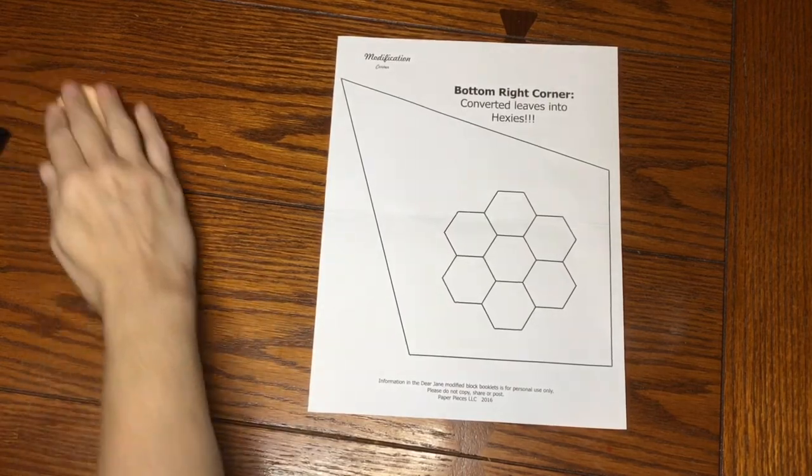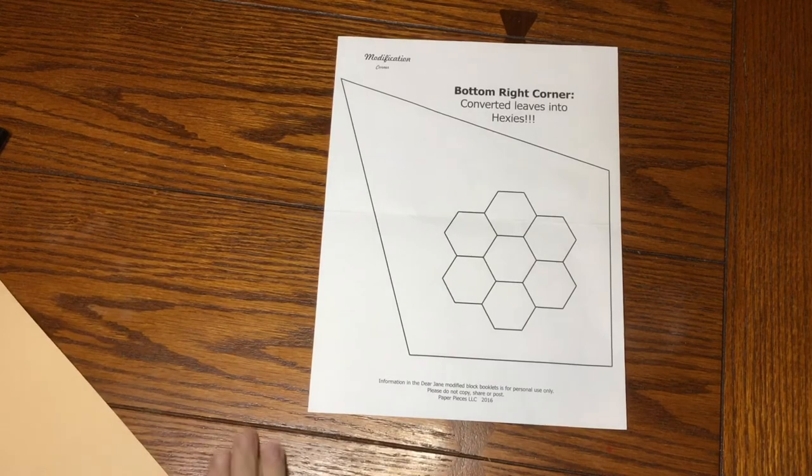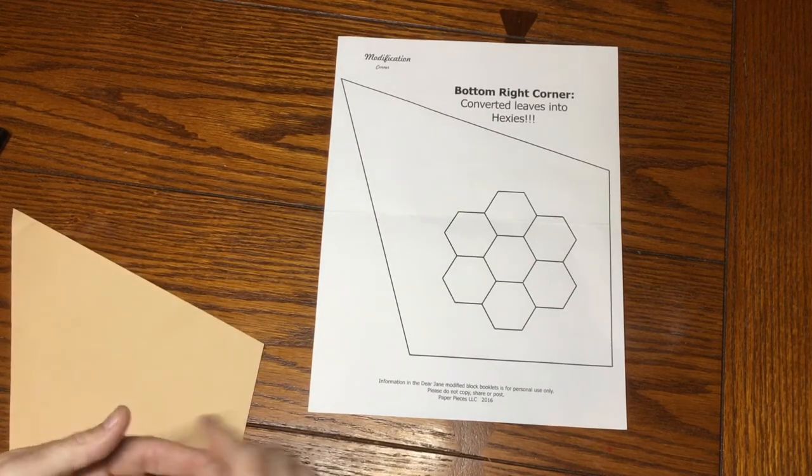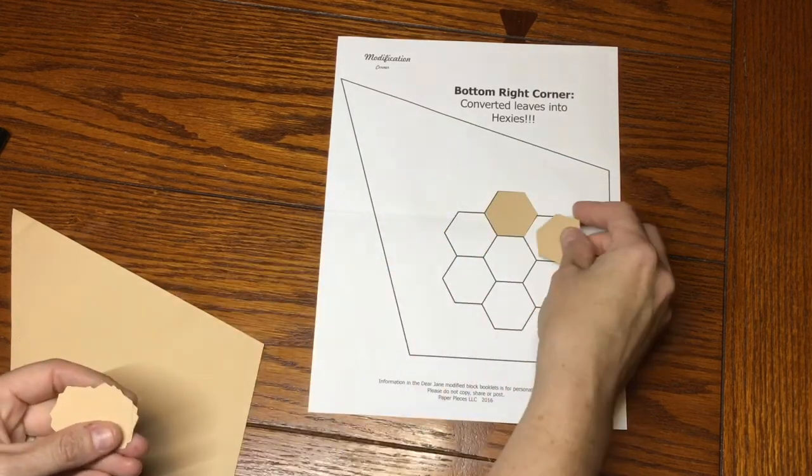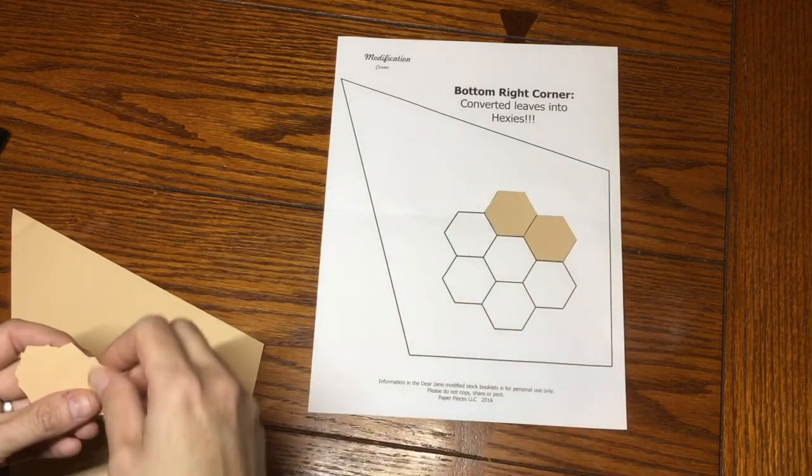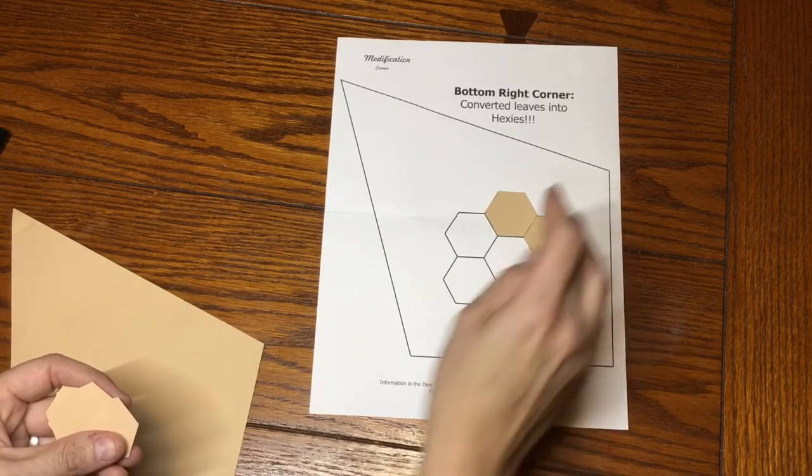So the last corner, very simple. Here's my background piece and my hexagons. And I will lay these out and label them and mark them for focus fabric and directional and all that fun stuff.